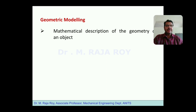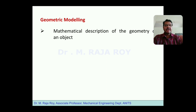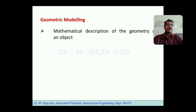In that program, the line equation will be there and we send data to that equation. To generate a line, you need to send two coordinate values — the starting point and end point. This coordinate data is fed to the computer, a program is invoked with the equation, and a line is produced on the computer screen.